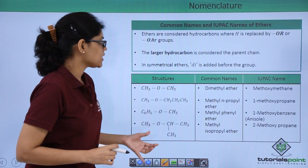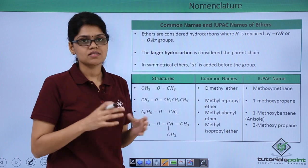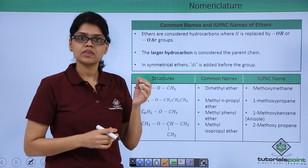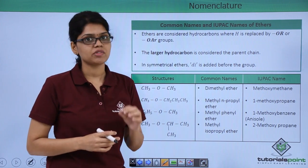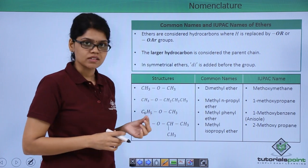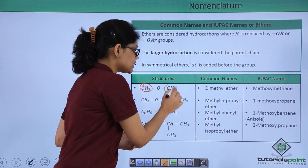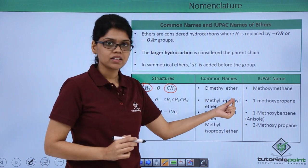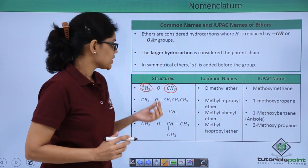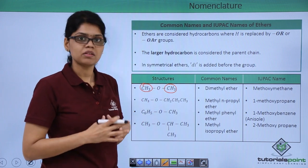Let us now see how to write the nomenclature of ethers. The larger hydrocarbon is considered the parent chain, and in symmetrical ethers we add the word 'di' before writing the name. For example, CH3-O-CH3 is a symmetrical ether with two methyl groups, so the common name is dimethyl ether and the IUPAC name is methoxymethane, because OCH3 is methoxy and the parent group is methane.